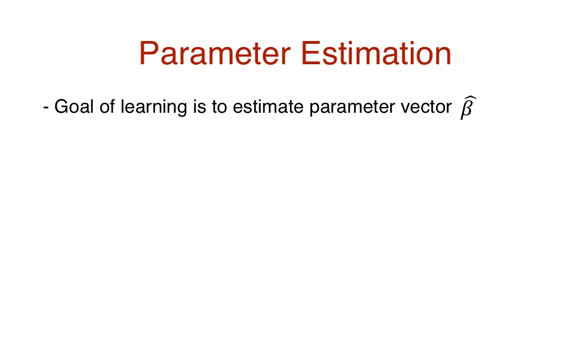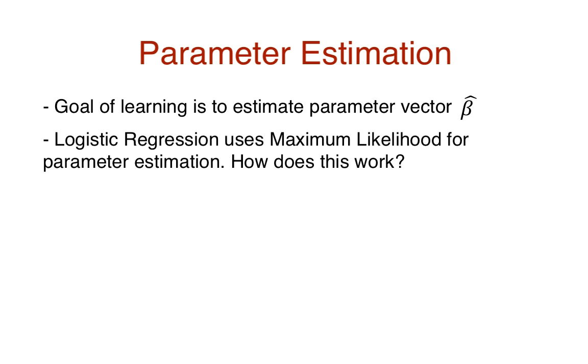Like how the least squares method is used to estimate parameters in linear regression and fit a model, logistic regression uses the maximum likelihood method for parameter estimation. In MLE, we take all the training data and split it up into two groups based on their labels, say their 0 and 1.